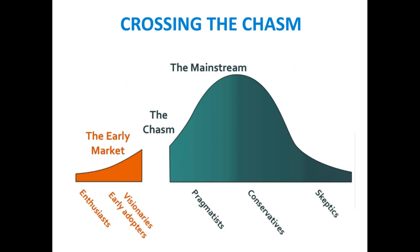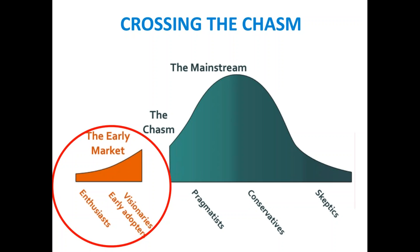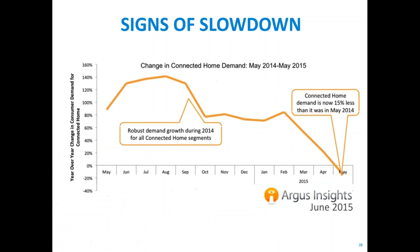Almost everything in the connected home is being adopted by enthusiasts and early adopters — the mainstream market hasn't seen these products yet. We're trying to cross the chasm between early adopters and mainstream consumers. We've already seen signs of slowdown: Parks Associates reported in June 2015 that demand and interest for connected home products actually went negative in the second half of the year, meaning even early adopters are stopping buying these products. The market is running out of early adopters and not yet appealing to mainstream consumers.